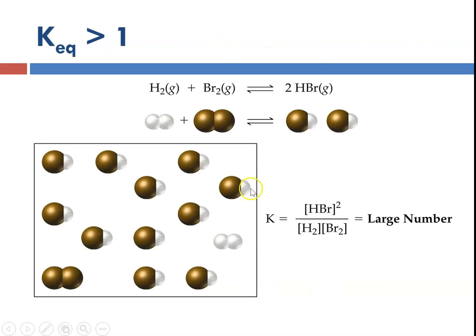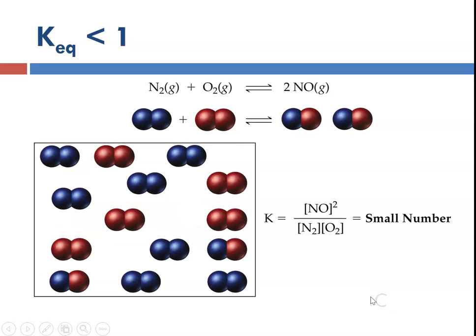If K_eq is greater than 1, that means the numerator is bigger, so the forward reaction is favored. If it's less than 1, that means the denominator is bigger, so the reactants are favored. For the next tutorial, we'll talk about how we actually calculate these K_eq values. This is Ms. Augustine, signing off.